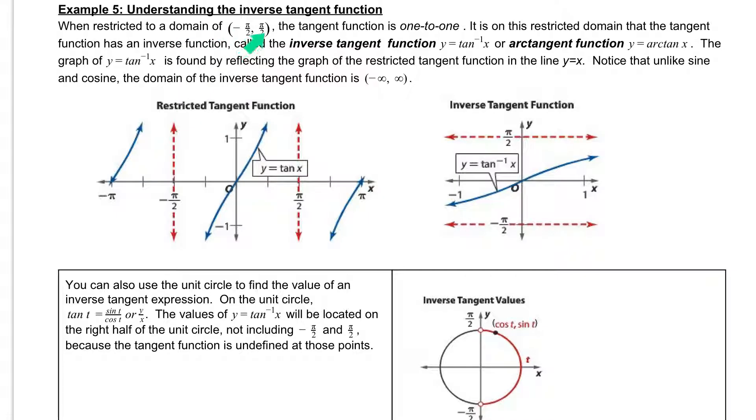When restricted to a domain of negative pi over 2 to pi over 2, notice this time we have the parentheses, which means the negative pi over 2 and pi over 2 are not included, and that's because there's asymptotes at negative pi over 2 and pi over 2.